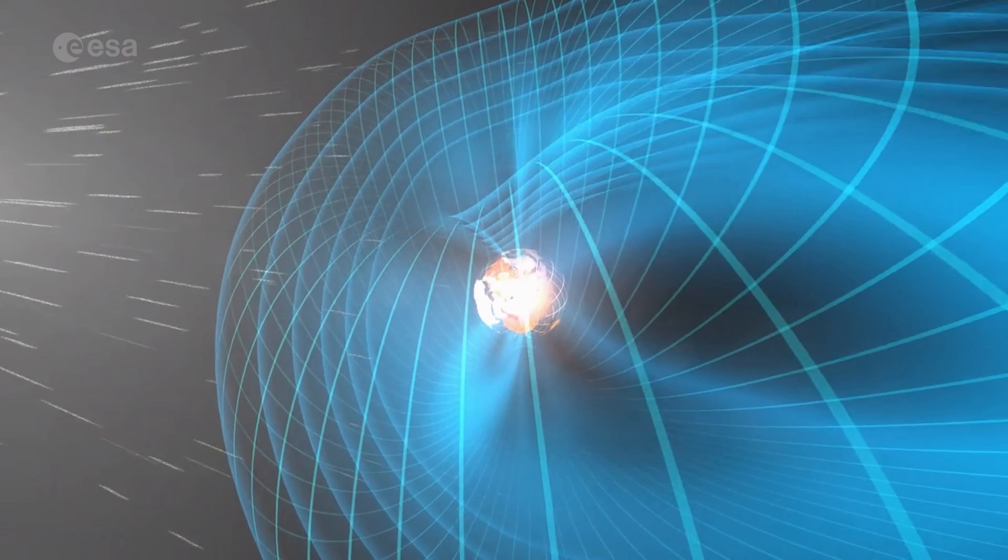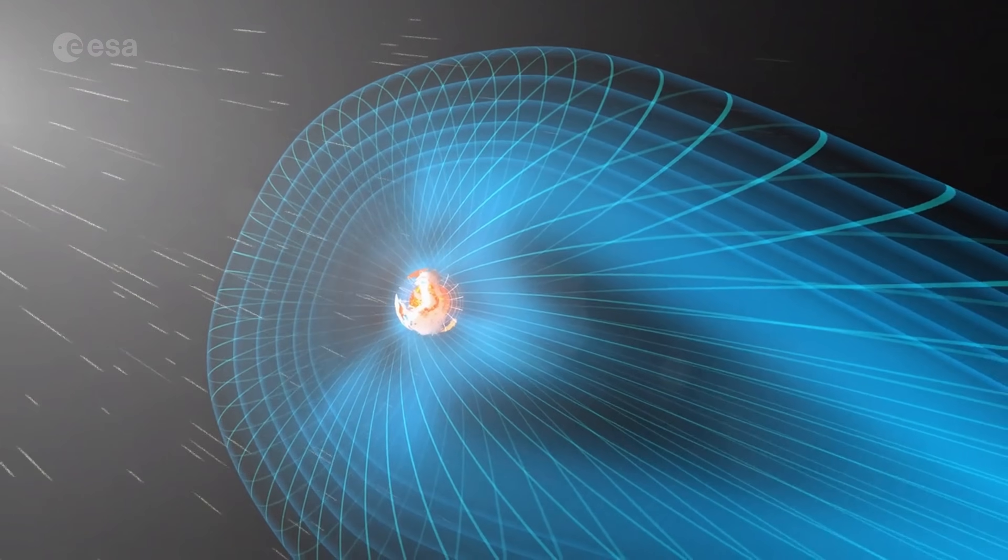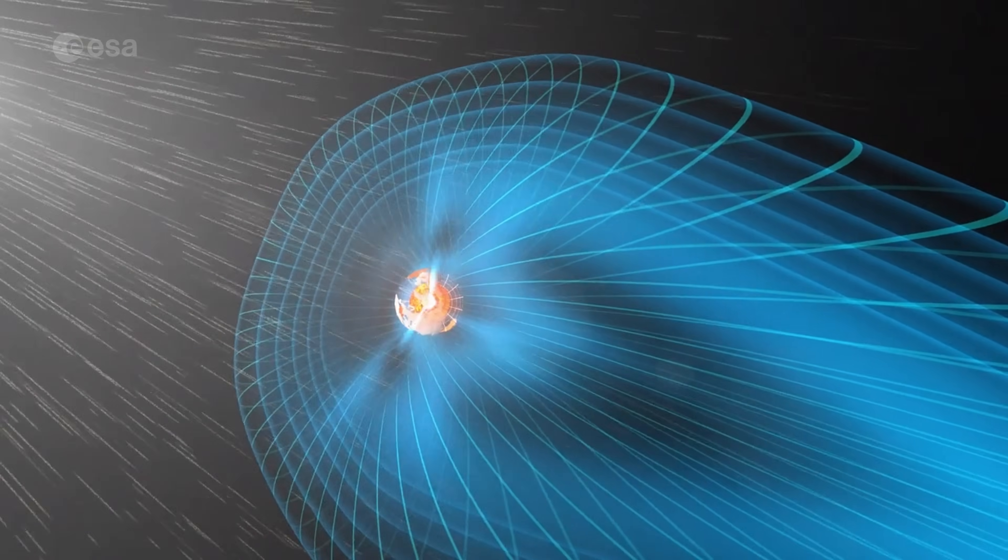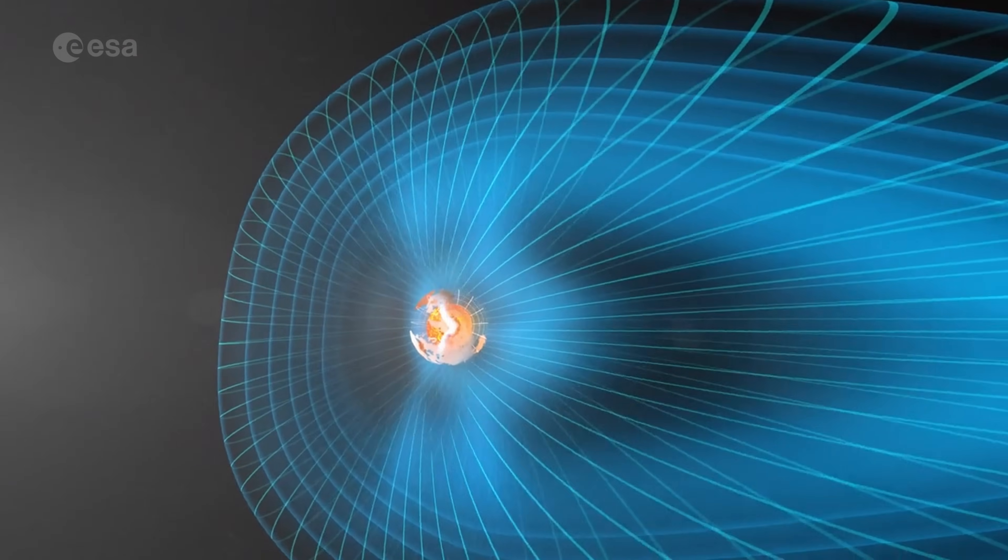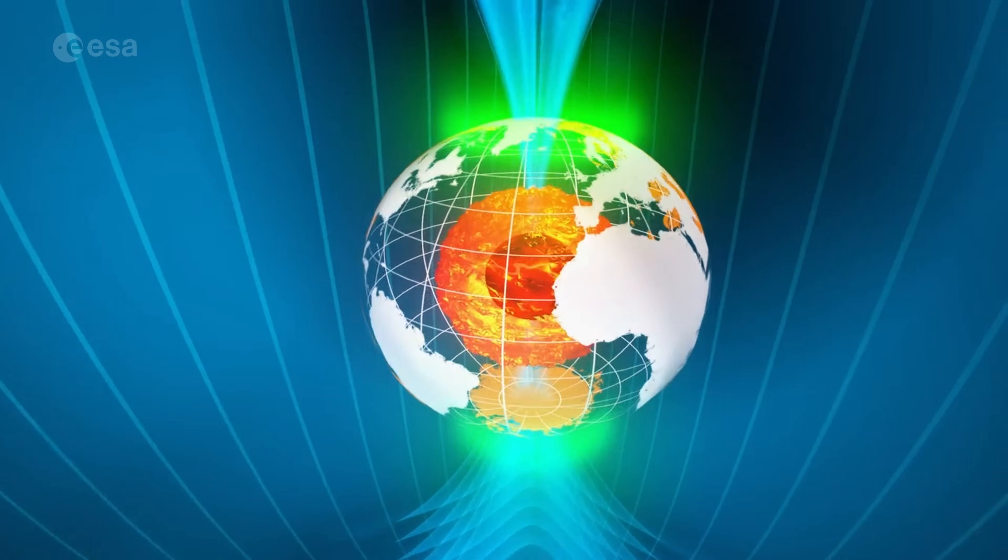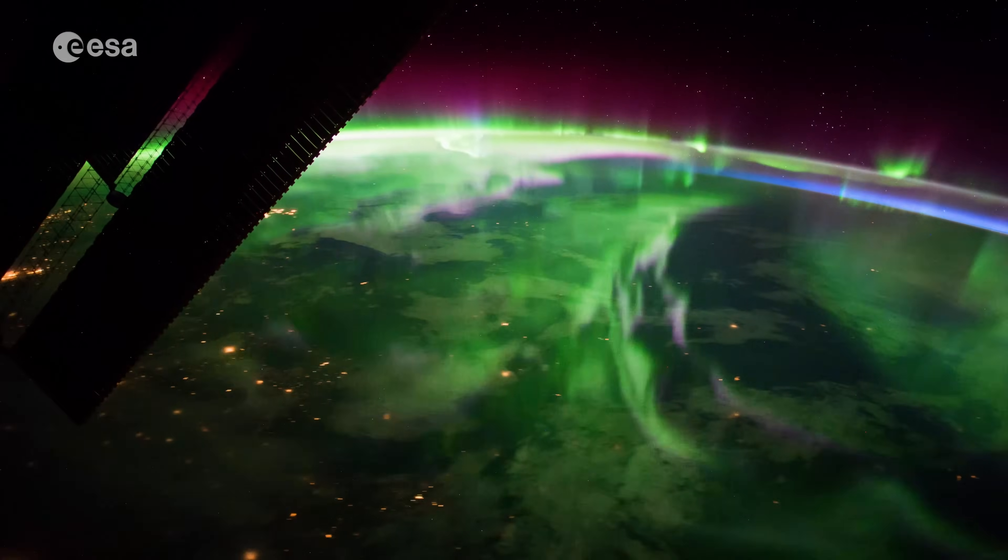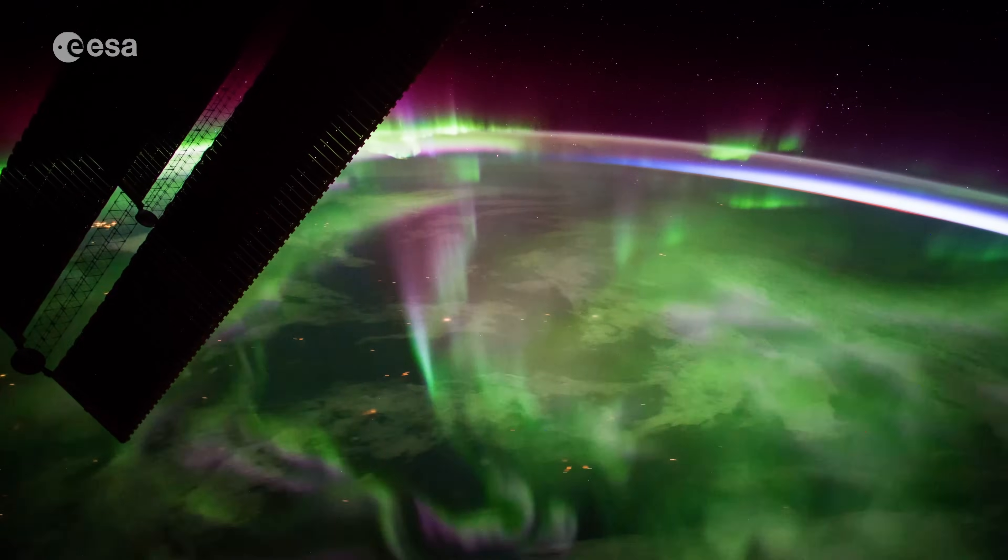Like an enormous umbrella, the magnetosphere protects us from most of the driving rain of particles that the Sun relentlessly sends in our direction. The gusts of this solar wind can still push through, sending bursts of energetic particles cascading towards Earth's surface. The most common result is the northern and southern lights, or auroras.